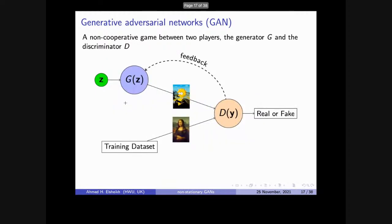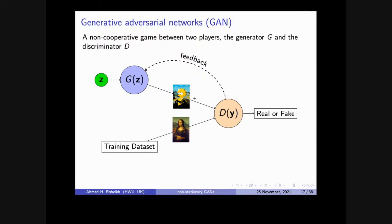If we put everything together and feed the training data as art — expensive art — we can hopefully at the end of training obtain good art that could be sold for millions. This is what you currently see in the news: people using this to generate art. If we manage the balance of the min-max game — this is why it's called a non-cooperative game — we can generate amazing things.